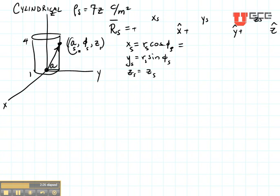Well, RS is A. So this is AS cosine of phi S, and this is just equal to ZS. So let's plug it in up here. This is equal to AS cosine of phi S, AS sine of phi S, and ZS.